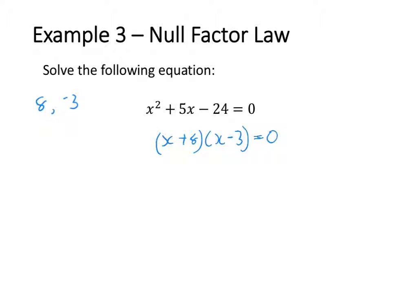Now I can apply the null factor law. I know that x plus 8 is equal to zero or x minus 3 is equal to zero. So if x plus 8 equals zero, then x is going to equal negative 8. Or if x minus 3 equals zero, x is going to equal 3. So for the equation x squared plus 5x minus 24 equals zero, x equals negative 8 or x equals 3. Those are three examples of how we can solve quadratic equations using the null factor law.